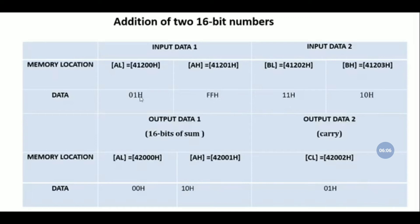In this example, the first data is FF01h and the second data is 1011h. The sum should come out to 10012h, and there should be a carry generated.